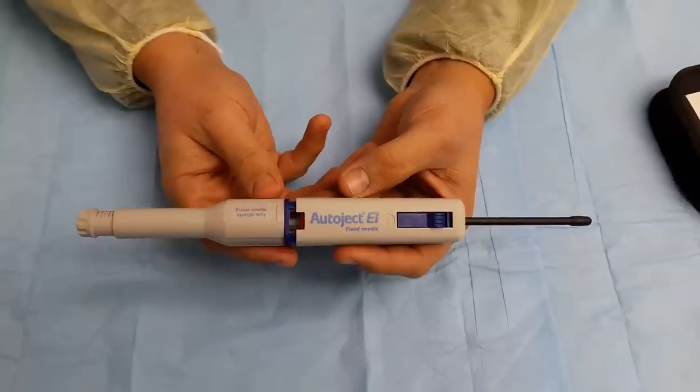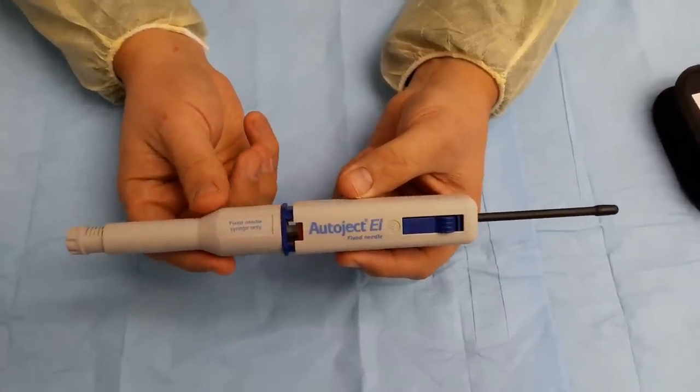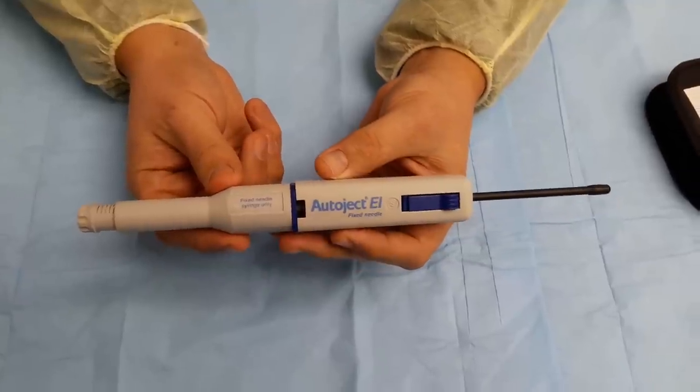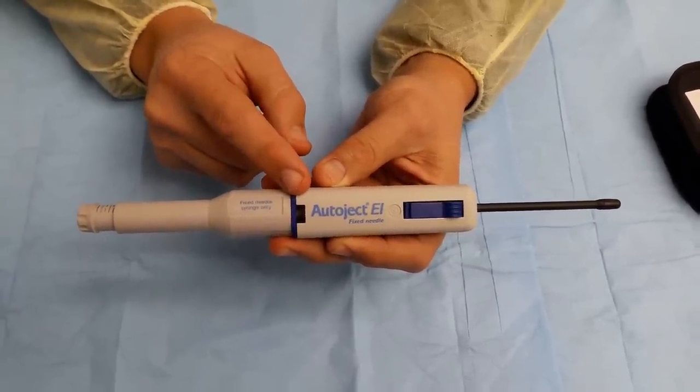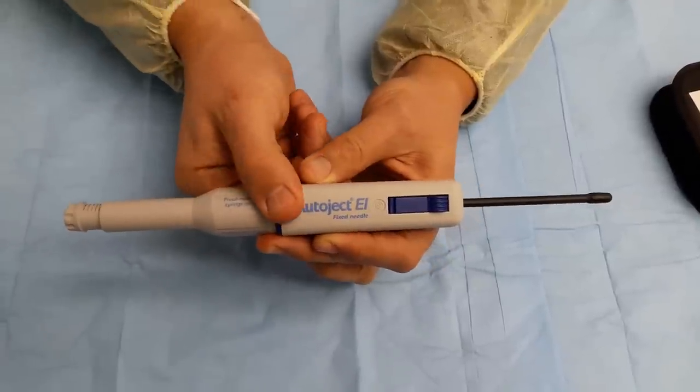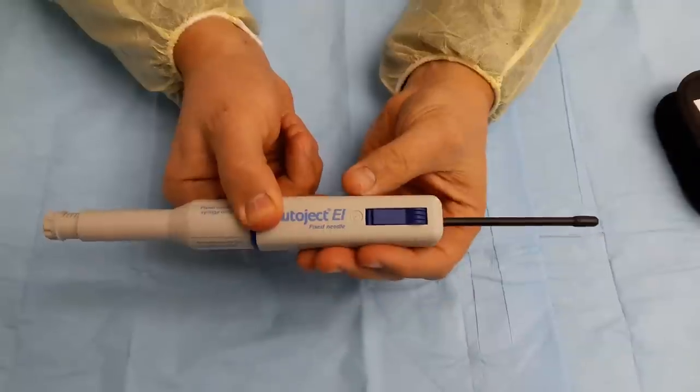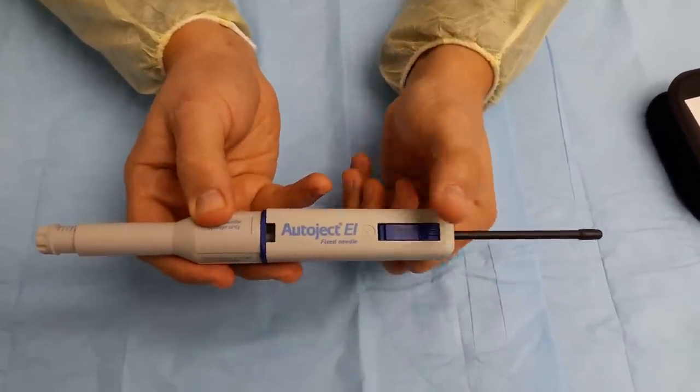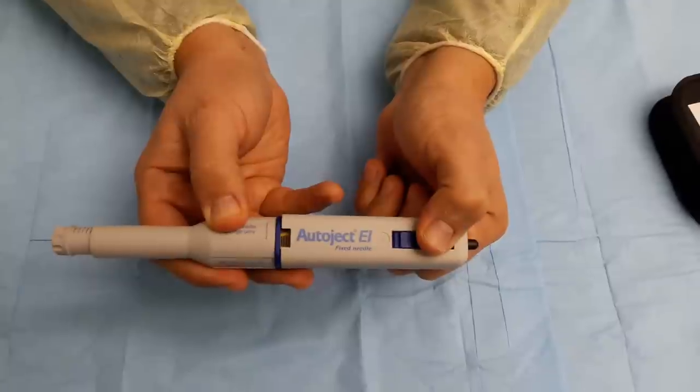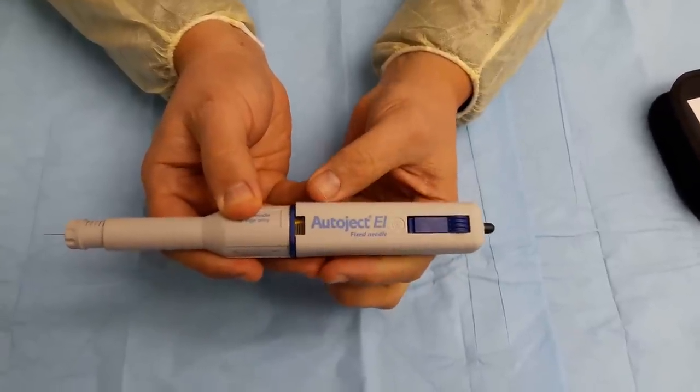In order for the needle to fly forward, the auto injector must be pressed against the body and the red in the window will disappear. Then, as the auto injector is held with one hand pressed against the body, you press on the button and the injection is made.